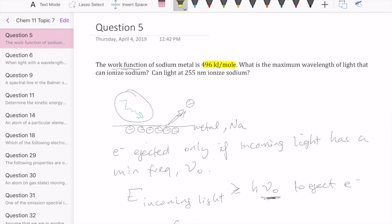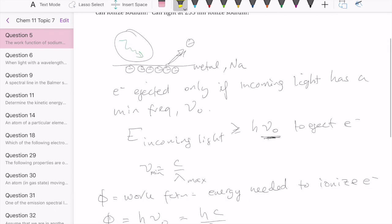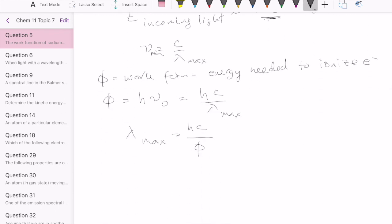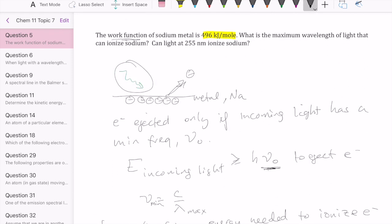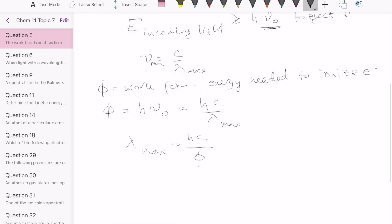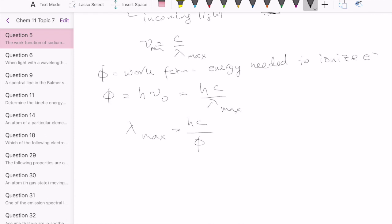Now, the phi or the work function is given as 496 kilojoules per mole of electrons. When we're talking about the actual photoelectric effect experiment, it's one photon interacting with one electron. So in this case, before we can actually make our calculation, we first have to calculate our work function for one electron.